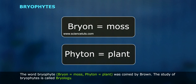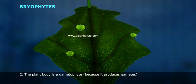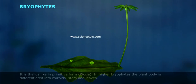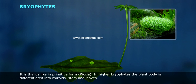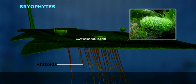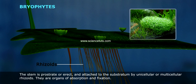Bryophytes are characterized by the following features. One, bryophytes chiefly occur in damp, shady and humid localities. Two, the plant body is gametophyte because it produces gametes. It is thallus-like in primitive forms such as Riccia. In higher bryophytes, the plant body is differentiated into rhizoids, stem and leaves. The stem is prostrate or erect and attached to the substratum by unicellular or multicellular rhizoids, which are organs of absorption and fixation.